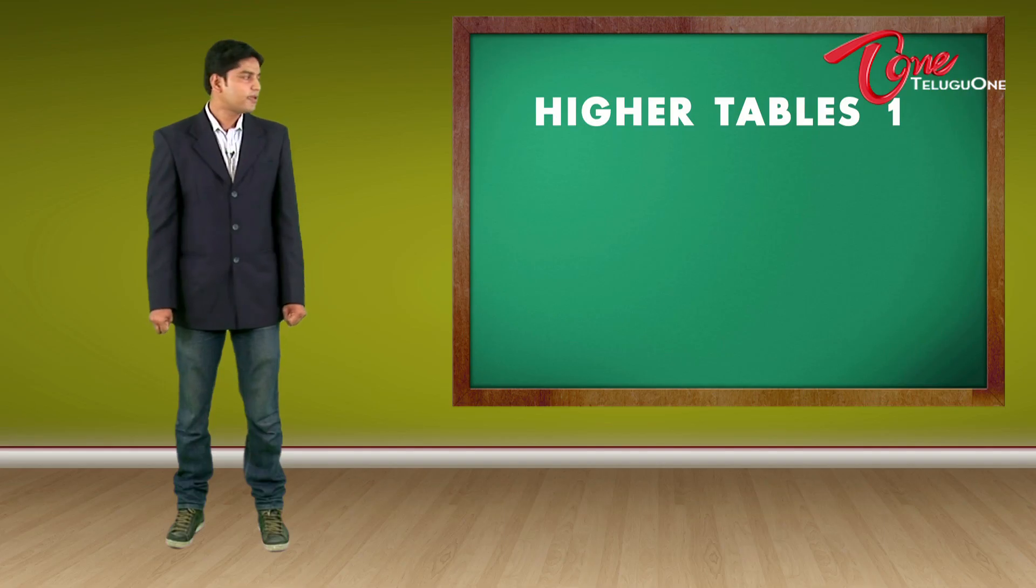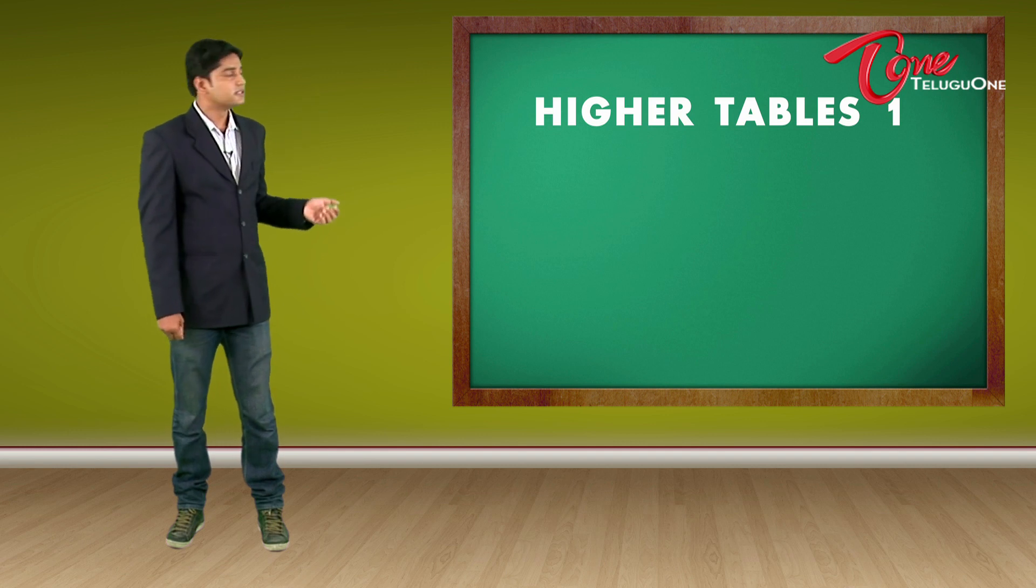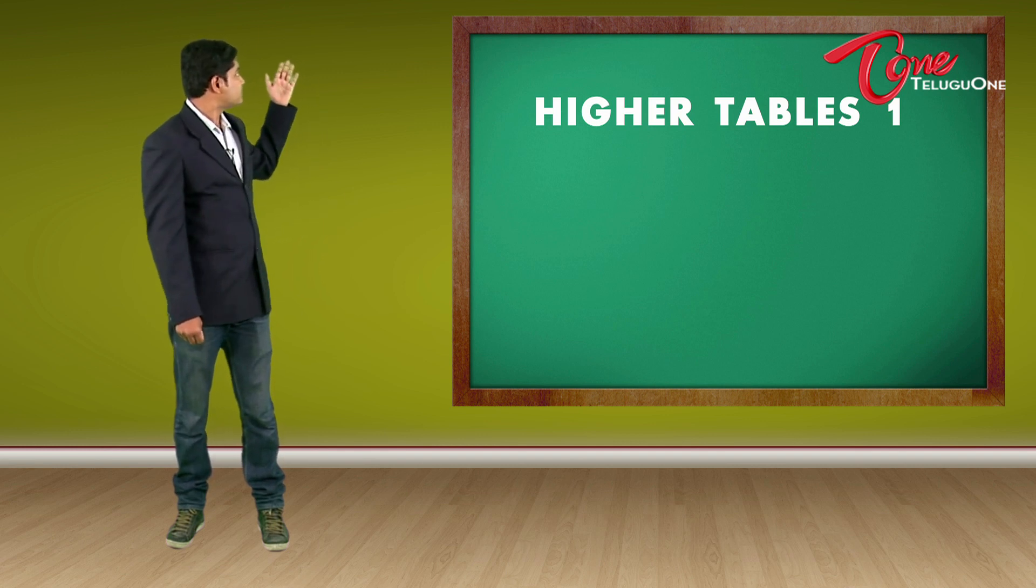Starting with Higher Tables 1. Here you might come across problems like 16 times 7 or 18 times 9 and you are going to calculate the direct answer. So let me give you 5 random examples. Okay, so let us start with the first one.